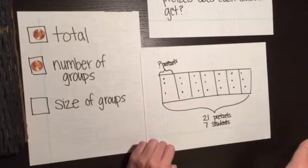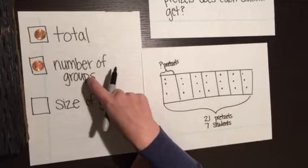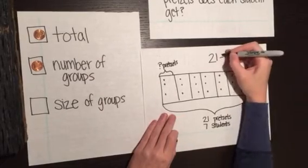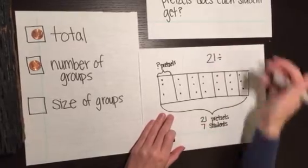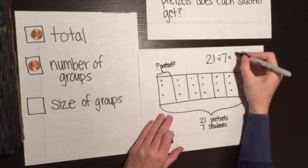Time to write my number sentence. So because we knew the total and the number of groups, this is a division sentence. 21, we start with the total, divided by seven groups equals, we figured it out, three.